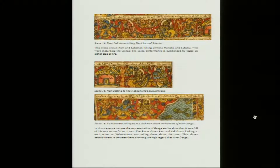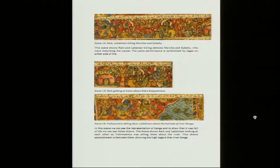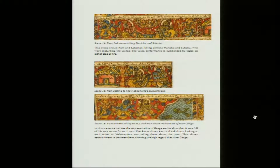Then we see Ram and Lakshman killing Marich and Subahu, the two demons who were disturbing the yajnas performed by the sages at that time. The scene shows the two brothers killing demons Marich and Subahu who were disturbing the yajnas — the yajna performance is symbolized by sages on either side of the fire.